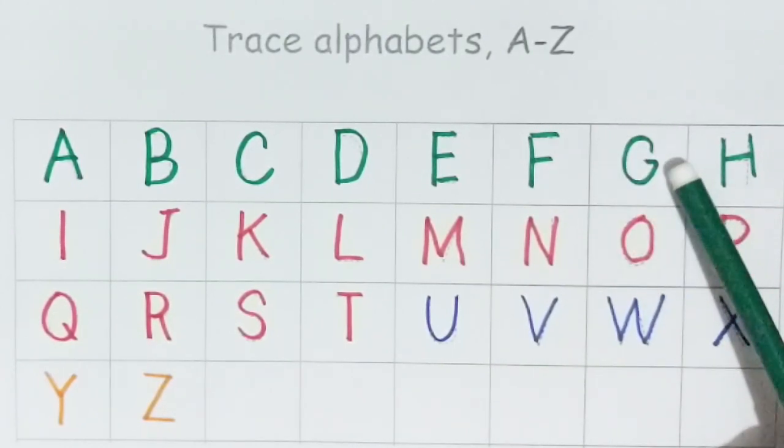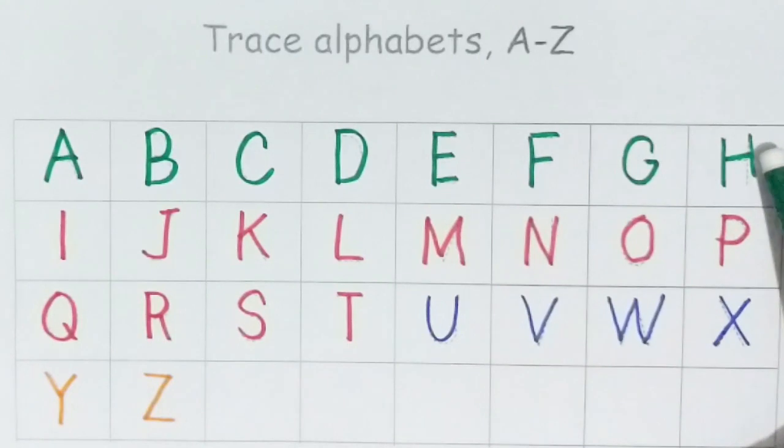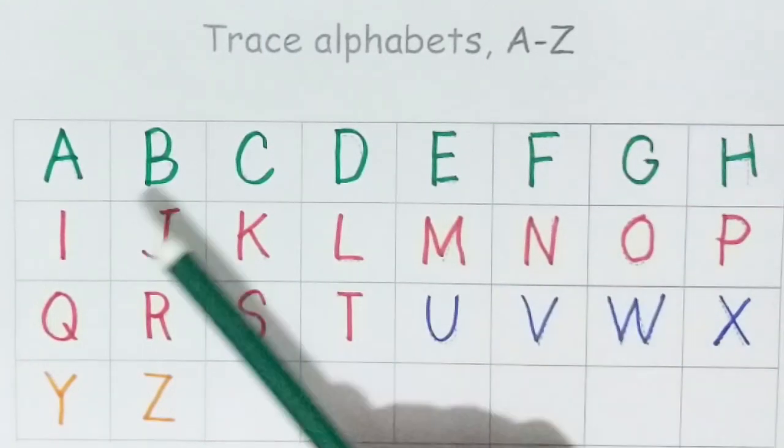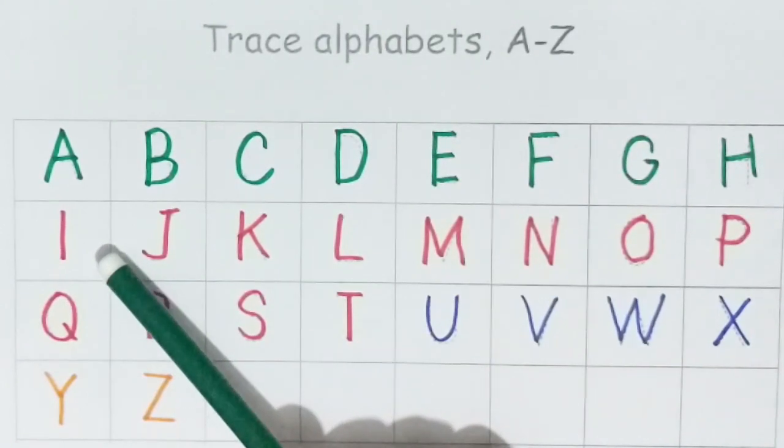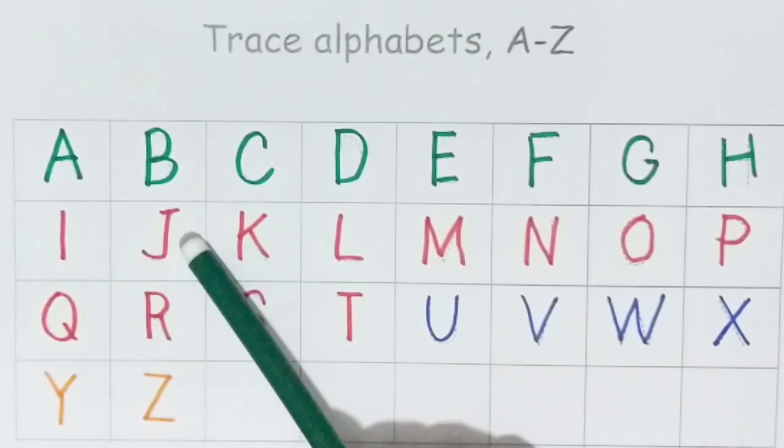G, G for green. H, H for helicopter. I, I for ice cream. J, J for jacket.